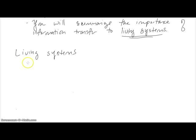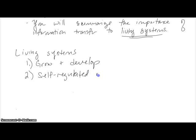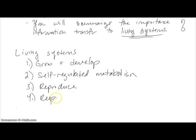The characteristics of living systems are: they can grow and develop, they can carry on self-regulated metabolism, they can reproduce, and they can also respond to stimuli. But how do these living systems know how to perform these complicated, very precise functions?